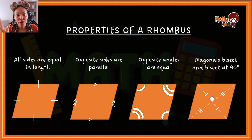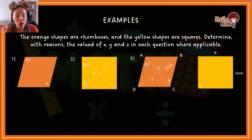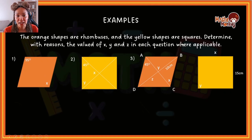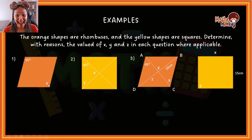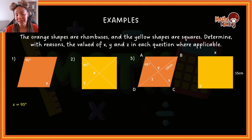Now let me show you how they ask questions and how to answer them based on the properties. The question says: the orange shapes are rhombuses and the yellow shapes are squares. Determine with reasons the value of x, y, and z in each question where applicable. Looking at the first question — this is a rhombus, so I know opposite angles are equal. That means x has to equal 95. The reason: opposite angles of a rhombus are equal.